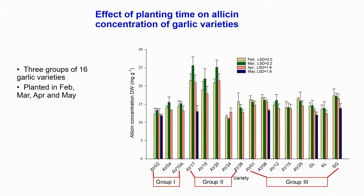Group 1 and group 2 garlic varieties planted later than March showed a substantial reduction in allicin concentration. For example, the variety AB17 reduced allicin concentration by half when planted in May. Group 3 garlic tends to have stable allicin concentration when planted from February to April; however, it still shows reduced allicin concentration if planted in May.